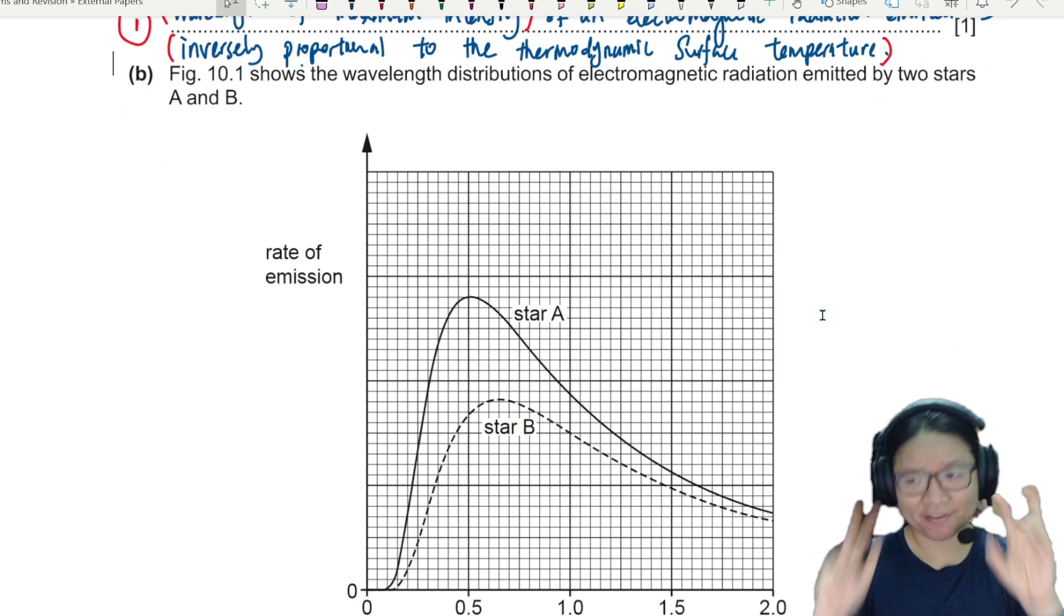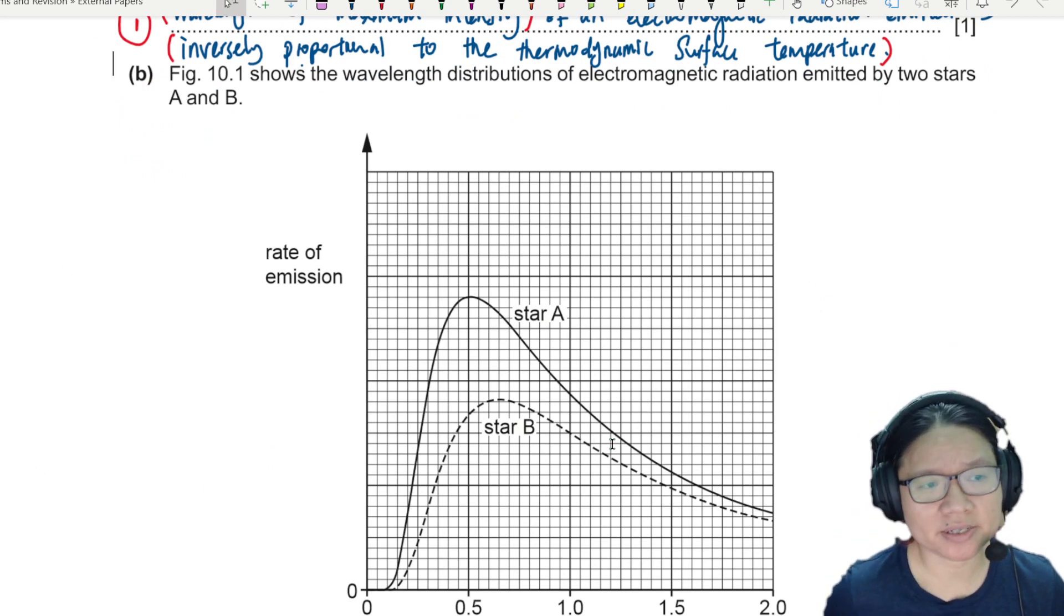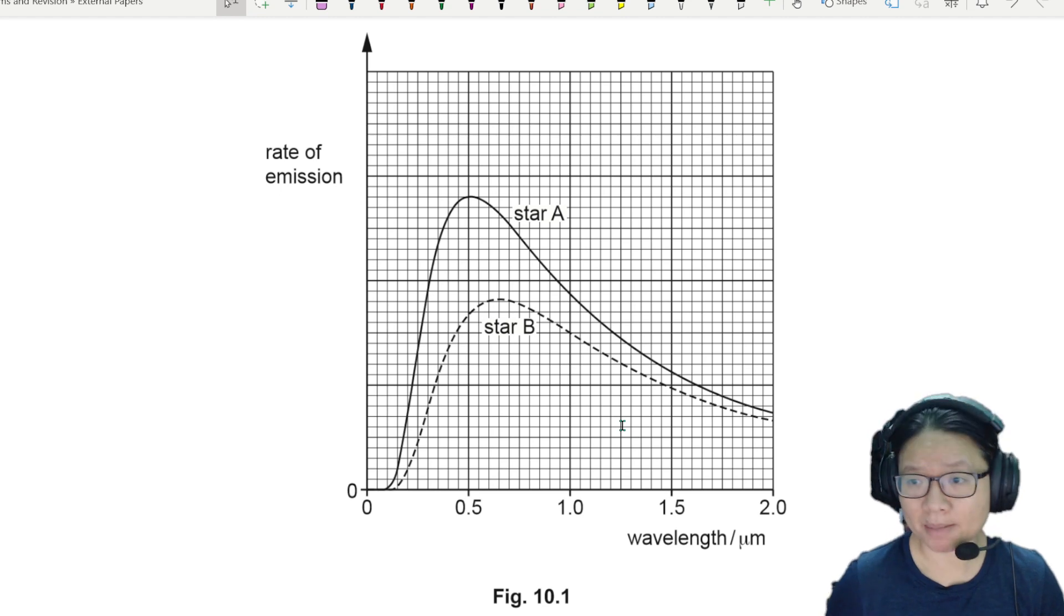So having these two is your one mark. I'm just giving you more context. So all stars will emit electromagnetic radiation, and the wavelength of the maximum intensity is the wavelength that is inversely proportional to the thermodynamic surface temperature. So the stars have different colors. Anyway, here you have two stars, star A and star B, and they have slightly different lambda max.